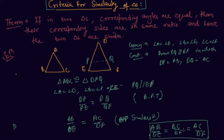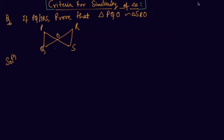Here is one example: the question states that PQ is parallel to RS in this figure, and we have to prove whether triangle PQO is similar to triangle SRO. Since PQ is parallel to RS, angle P will be equal to angle S and angle Q will be equal to angle R, because these are alternate interior angles. Angle POQ is equal to angle SOR as these are vertically opposite angles.